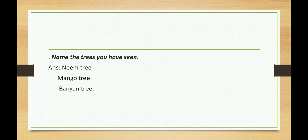Next one: Name the trees you have seen. Children, you have seen so many trees, right? We should write here. First one is Neem tree, Mango tree, and Banyan tree. Read once again: Neem tree, Mango tree, and Banyan tree.